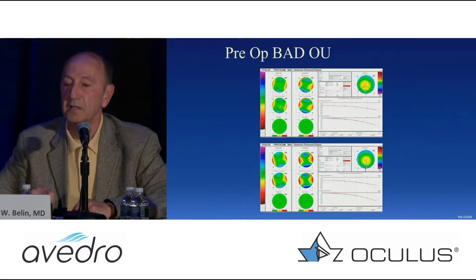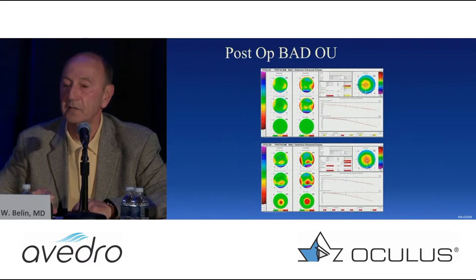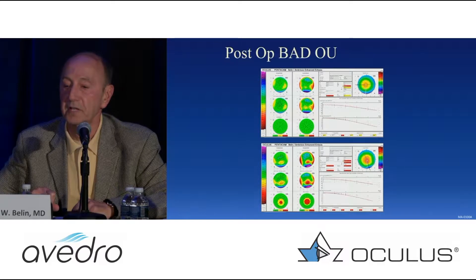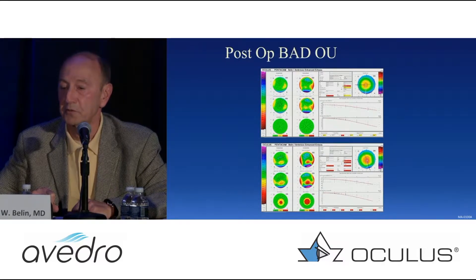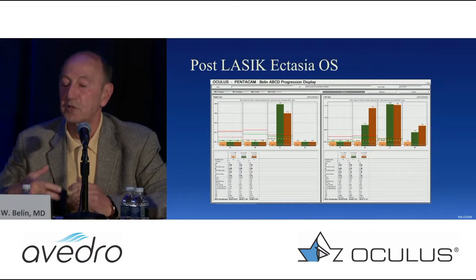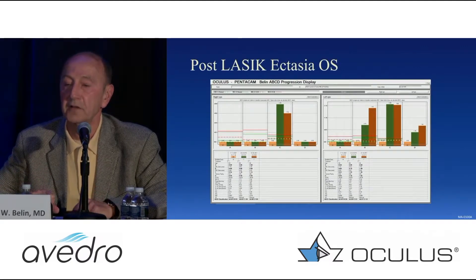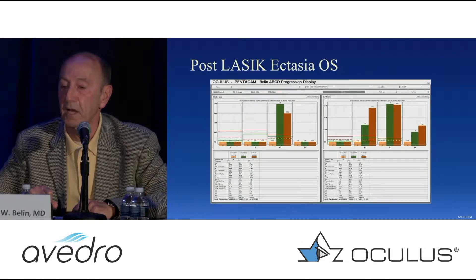This is an example here of pre-op BAD OU — it looks very normal. Post-op, you'll see on the bottom one clearly a change. So this is post-LASIK ectasia: both a mild change in the anterior surface and a change in the posterior surface. And this is the progression display — you can see the right eye on your left is normal, but you can see a dramatic change on the left eye showing post-LASIK ectasia.